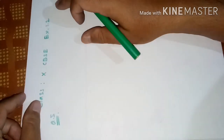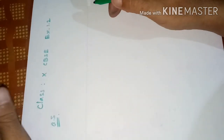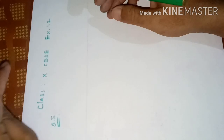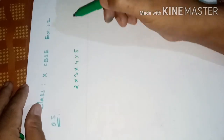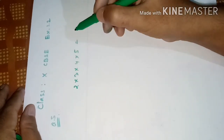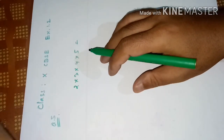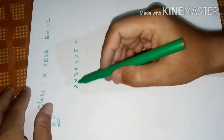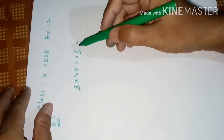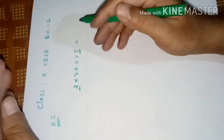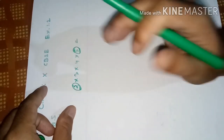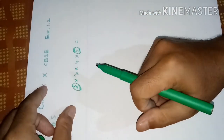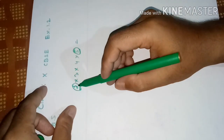Before starting this sum, let's discuss something. Suppose I multiply 2 × 3 × 4 × 5 — this type of number will always end with 0. Why? Because the factors 2 and 5 are there. If factors 2 and 5 are together in the prime factorization of any number, then the number will end with 0.